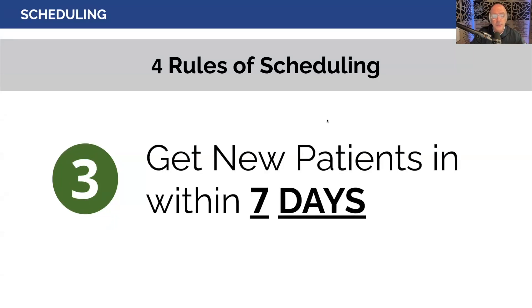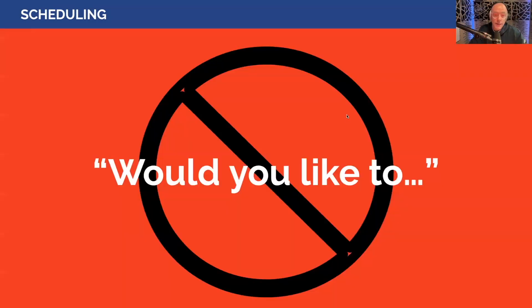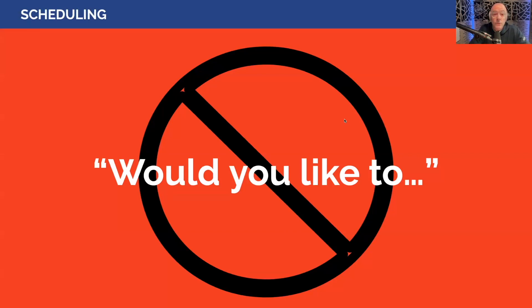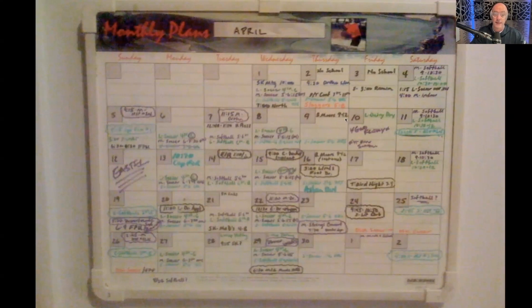Rule four: patients fit into your schedule. Never say 'what works for you?' — because when you ask that, the first thing I think of is nothing ever works for me. You have to create so much value through verbal skills that people rearrange their life to fit into yours. It happens with vascular surgeons; it happens with hair appointments. My wife and three daughters will move the earth to get to a hair appointment. You never want to squeeze into somebody else's schedule, because you instantly devalue what you do — and ultimately that leads to a cancellation.